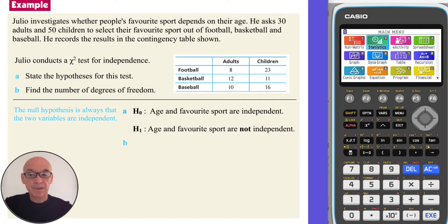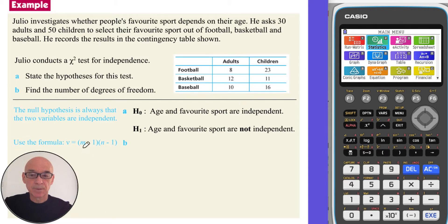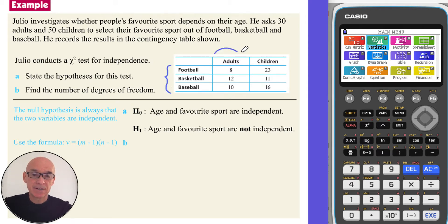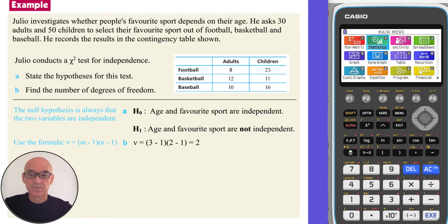In part B, we're asked to find the number of degrees of freedom. We use the formula (M minus 1) multiplied by (N minus 1), where M is the number of rows — we can see there are three rows — and N is the number of columns — we can see there are two columns. So that's (3 minus 1) multiplied by (2 minus 1), equal to two degrees of freedom.